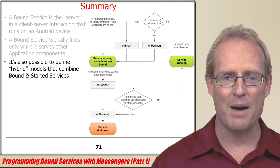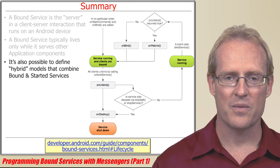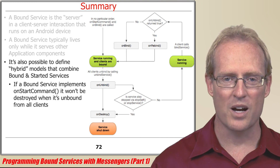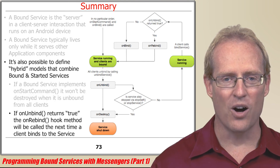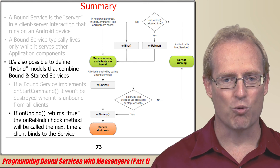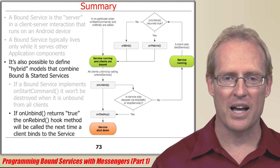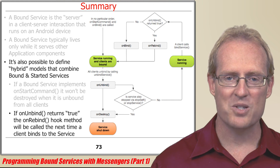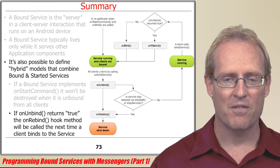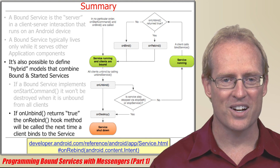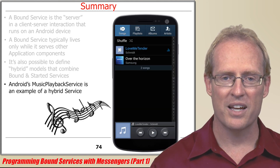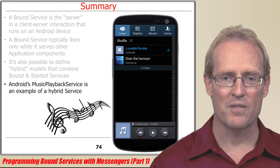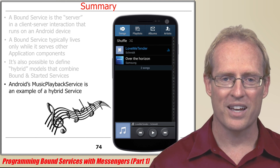It's also possible to define hybrid models that combine bound and started services. If a bound service also implements the onStartCommand hook method, it won't be destroyed when unbound from all clients. If the onUnbind hook method returns true, the onReBind hook method will be called the next time a client binds to the service, instead of having it receive a call to onBind. OnReBind is passed the intent originally used to bind to the service via the bind service method call. Although hybrid services are not nearly as common as either started or bound services, the Android Media Playback service is an example of a hybrid service that's both started and bound.